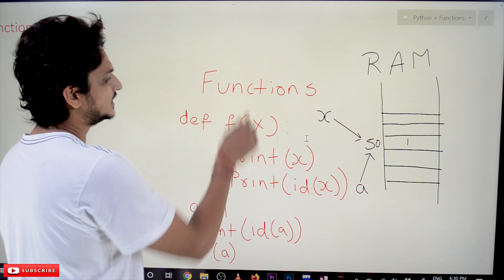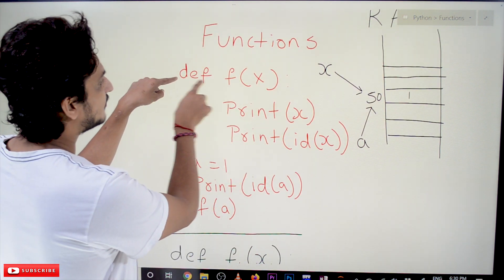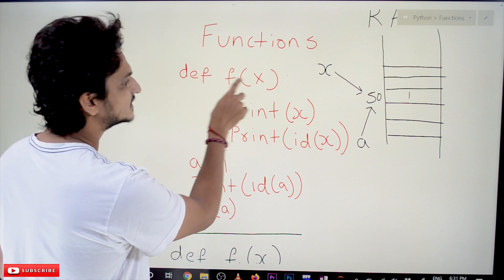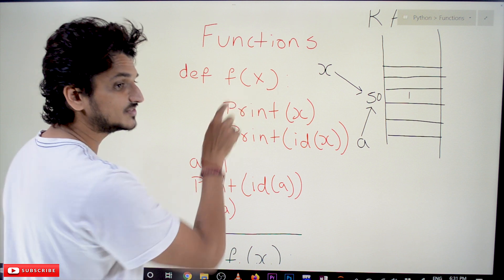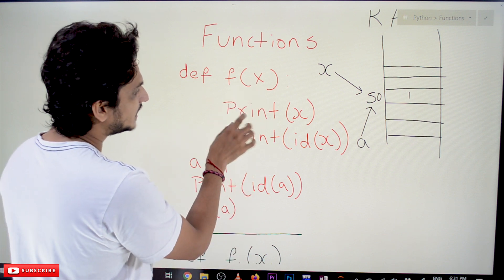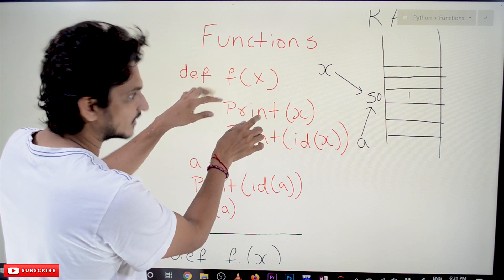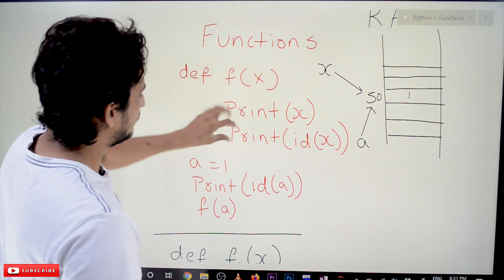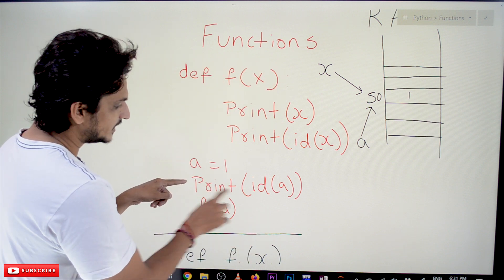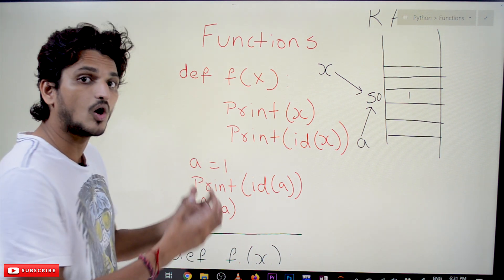Let us take an example. We have defined a function f of x — f is the function name and x is the input parameter. This is the body of the function. This is the complete definition of the function. After that, we have defined a is equal to 1, print id of a, and f of a — this means we are calling the function.